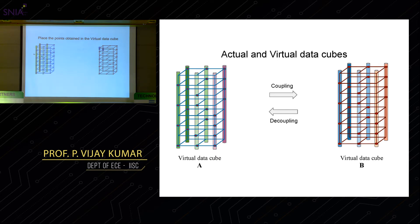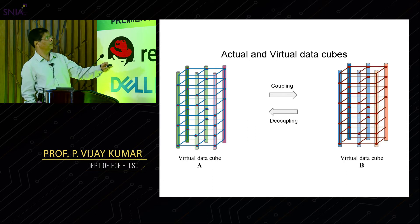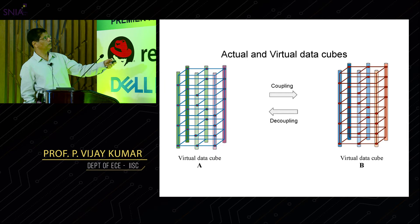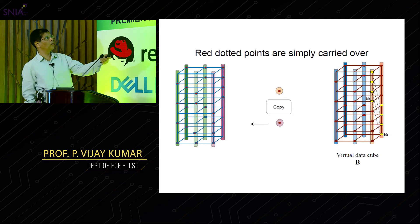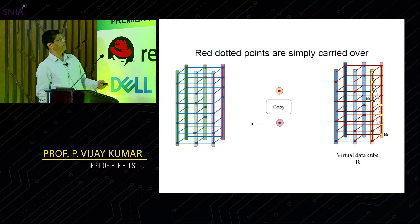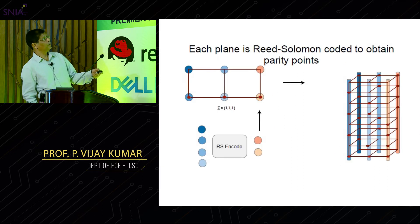For the uncoupled fixed-point elements, no transformation is needed — you transfer them as-is. This completes the data portion of the virtual data cube B. Now in the virtual cube, the next step is to compute the parity nodes, which is nothing but a standard RS code: take a (4, 2) Reed-Solomon code and RS-encode each row to get the parity entries. Repeat for every row. In this way you recover the entire virtual data cube B.